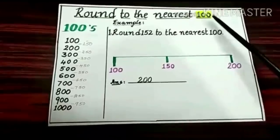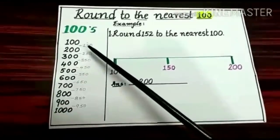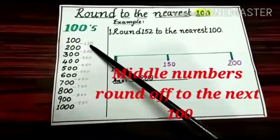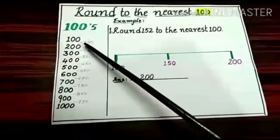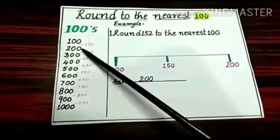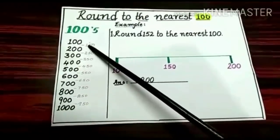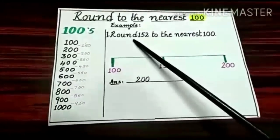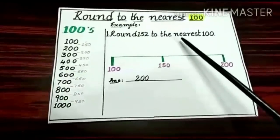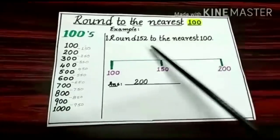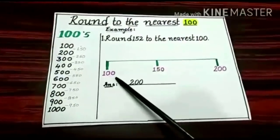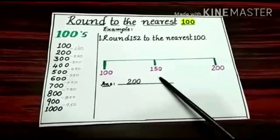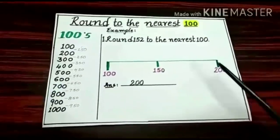Now let us discuss about rounding numbers to the nearest hundreds. What are the hundreds? 100, 200, 300 and so on. The middle numbers between the hundreds are also given. If the given number is more than the middle number, round up to the next 100. If the given number is less than the middle number, round down to the before 100. Example: round 152 to the nearest 100. 152 lies between 100 and 200. 152 is more than the middle number, so round up to the next 100 — that is 200.